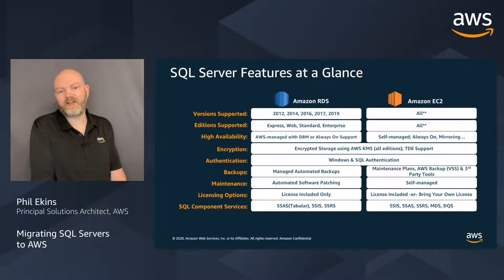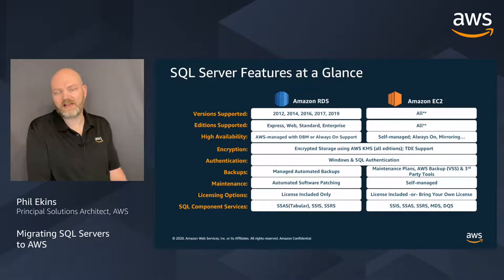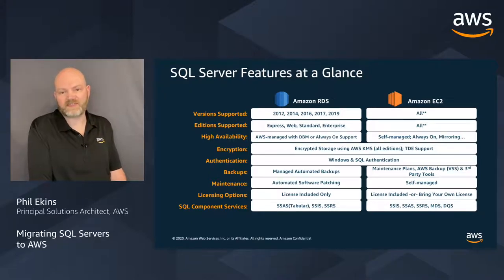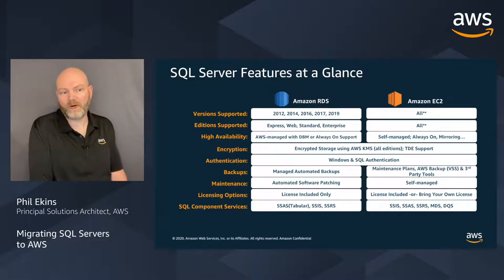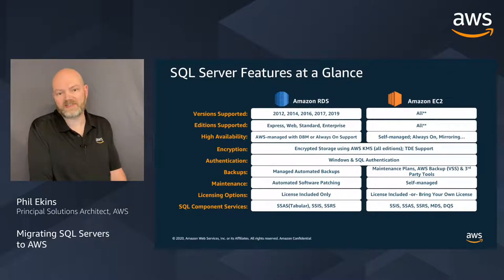On licensing, RDS only offers a license-included model — the rate you pay per minute includes a portion for a Windows license and a SQL Server license, so you only pay for what you use. On EC2, we offer both the license-included model and a bring-your-own-license (BYOL) option. The BYOL option has some caveats around software assurance, but we have a number of different licensing models and flexibility to allow you to bring those licenses to AWS. On EC2 you also have Analysis Services Tabular, SSIS, and SSRS, whereas with RDS you're more limited in those additional components.